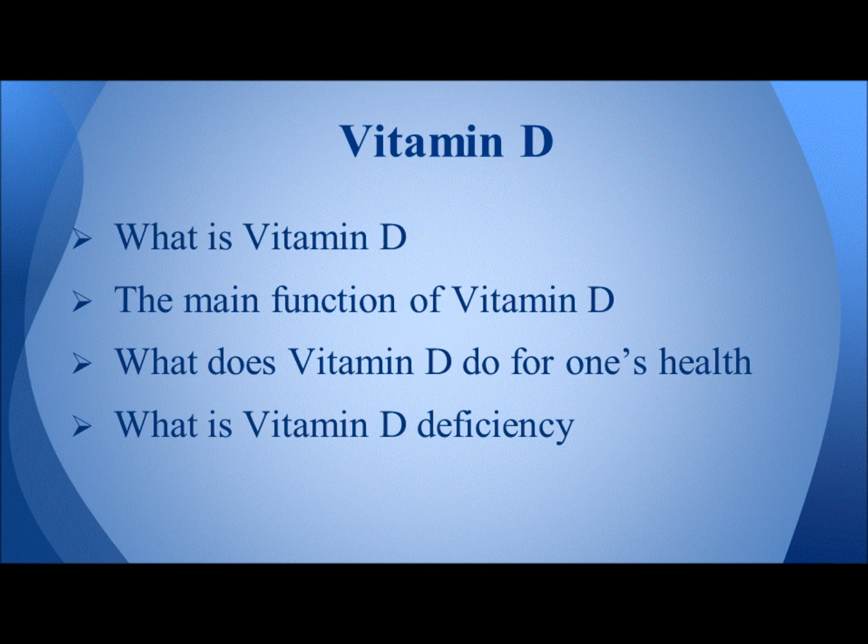Vitamin D, also known as the sunshine vitamin, is different from other essential vitamins because our own bodies can manufacture it with sunlight exposure. Vitamin D is essential for the formation, growth, and repair of bones and for normal calcium absorption and immune function.